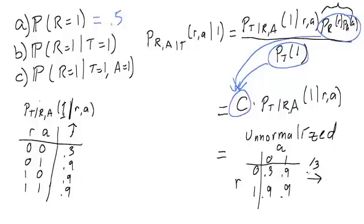So if we divide by 3, then we get a table that looks something like 0.1, 0.3, 0.3, 0.3.